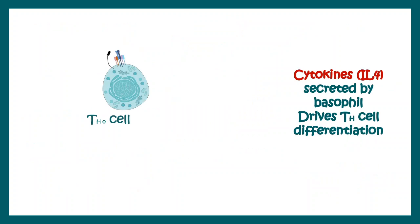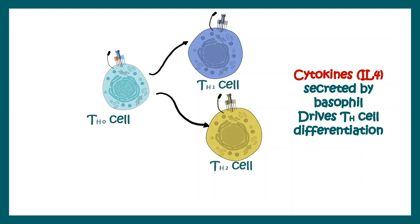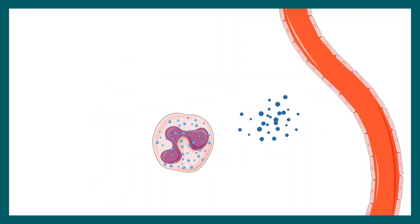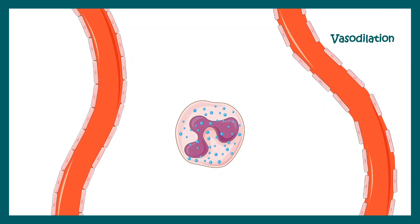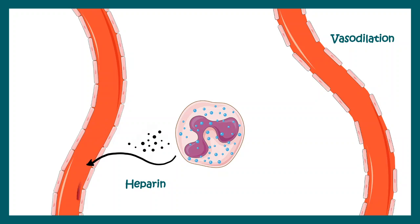One of the major roles of basophil is to drive the differentiation of TH0 cells into TH2 cells. Basophil-secreted IL-4 actually leads to this differentiation process. Basophils also secrete histamine, which acts on capillary endothelial cells and leads to vasodilation. They also secrete heparin, which can prevent blood clotting.